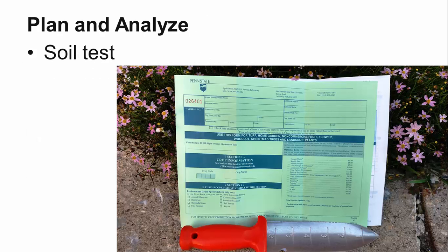You cannot just buy a few plants and plant them in the ground and expect success. There are many items to consider, including plant species, their placement, and future maintenance of the rain garden. In order to have a successful and attractive rain garden, there are important preliminary steps that need to be taken.